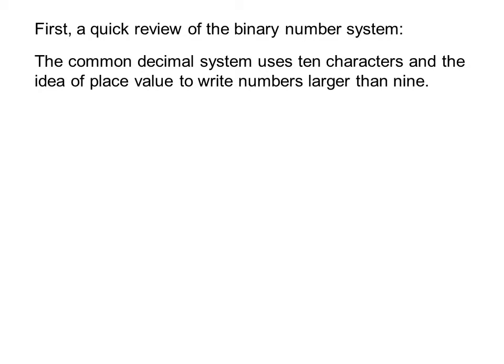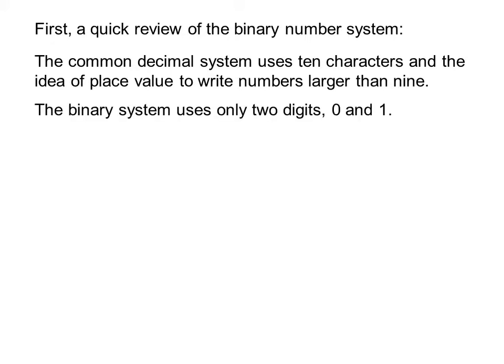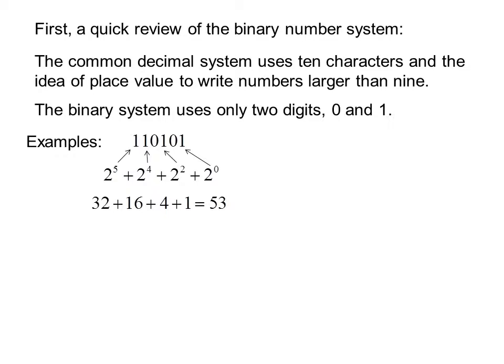The common decimal system uses 10 characters and the idea of place value to write numbers larger than 9. The binary system uses only two digits, 0 and 1. For example, 110101 in binary is equivalent to 2 to the 5th plus 2 to the 4th plus 2 squared plus 2 to the 0, which is 32 plus 16 plus 4 plus 1, equals 53 in the decimal system.